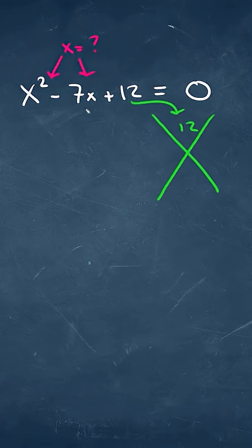We'll put the number at the end here, and we'll put this negative 7 down here. We're trying to figure out a number that we multiply to 12, but we're going to add to negative 7.